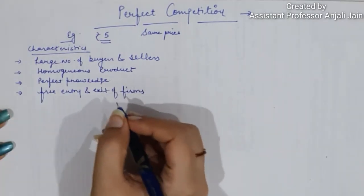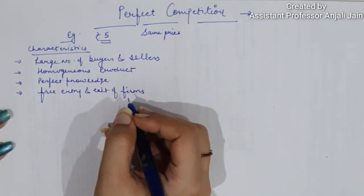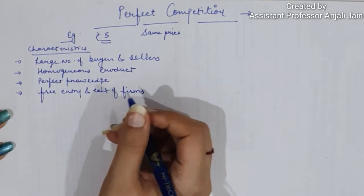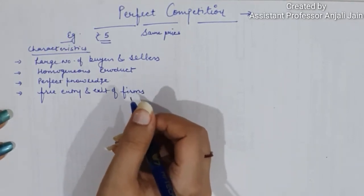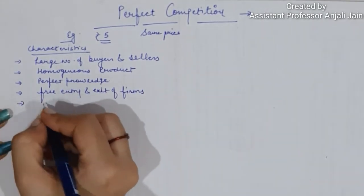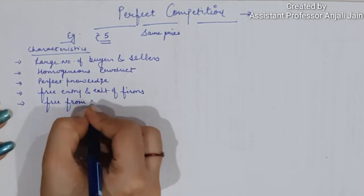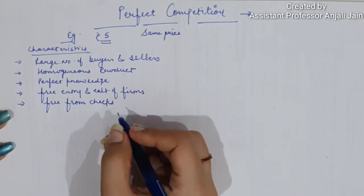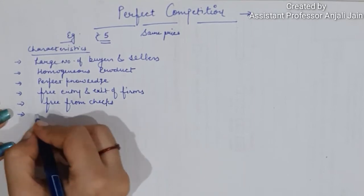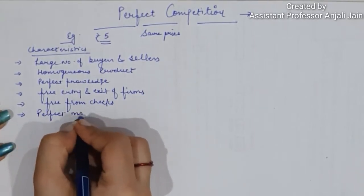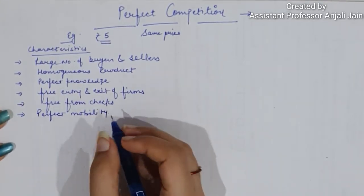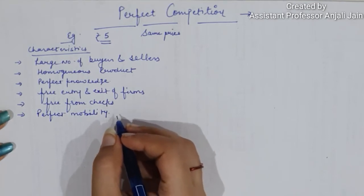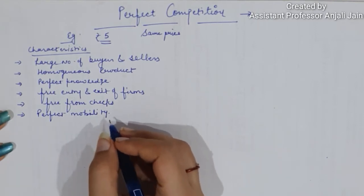Next comes free entry and exit of firms. Under perfect competition, any new firm can enter the industry or any existing firm can exit. There are no regulations on entry and exit of firms. Next comes freedom from checks — buyers and sellers are free from any restrictions regarding buying and selling. Next comes perfect mobility — factors of production as well as goods and services are perfectly mobile.